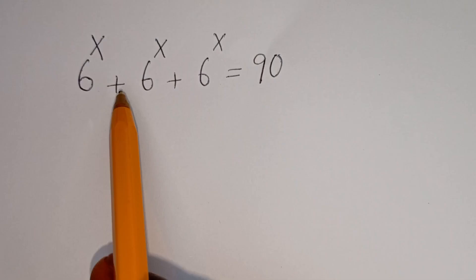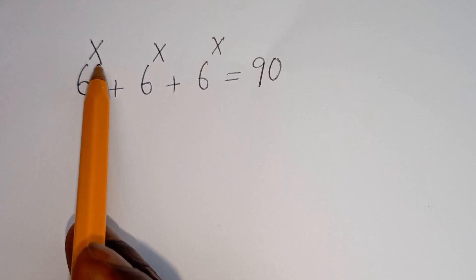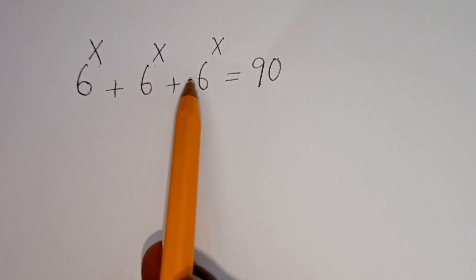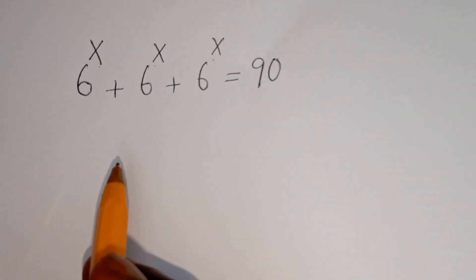Hello, how to solve for x in this equation? 6 to the power of x plus 6 to the power of x plus 6 to the power of x is equal to 90.